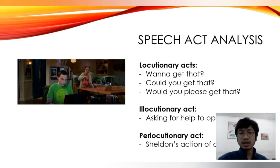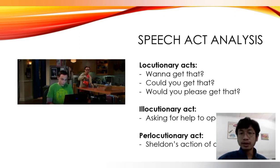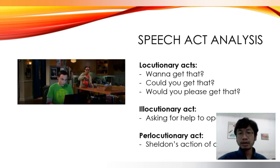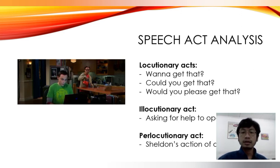From the video we can see that Sheldon didn't really understand the illocutionary act of the first two locutionary acts, which is why Leonard had to repeat them up to a third time. Finally, Leonard said 'Would you please get that?' and after that Sheldon understood that the illocutionary act was that Leonard was asking for help to open the door. Leonard was not intending to simply ask about Sheldon's ability to open the door — he was actually asking for help.